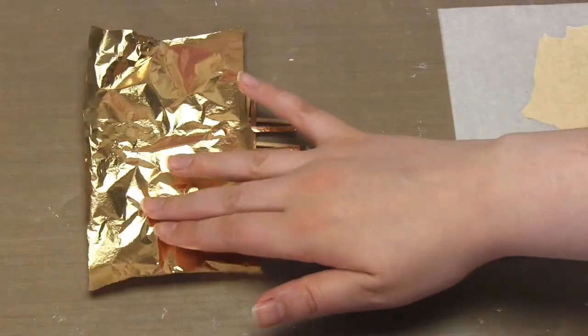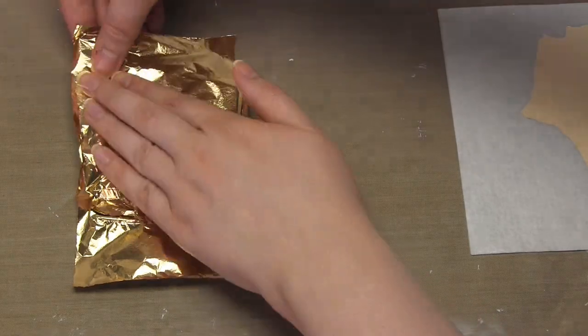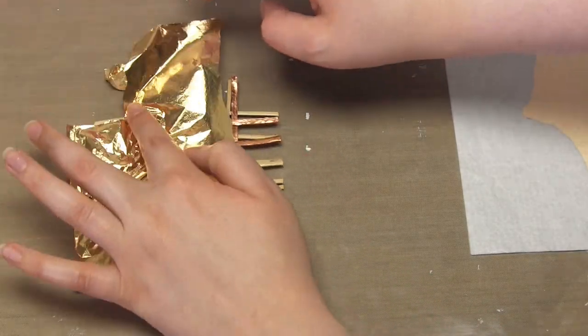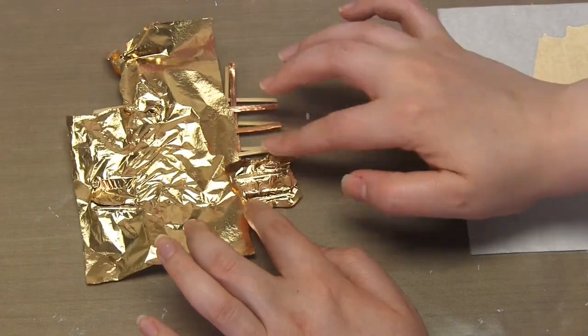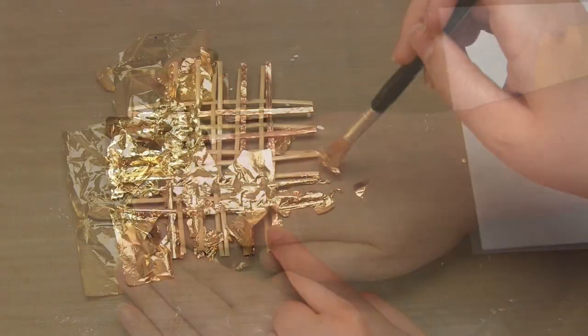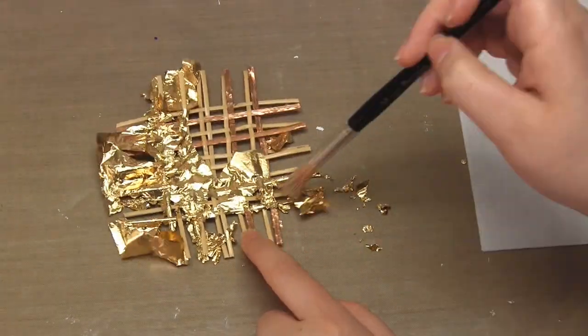You then just carefully apply the gold leaf over the top of the glue and press it down. Wait a little while and then remove the excess with a soft brush. And here you can see the result.